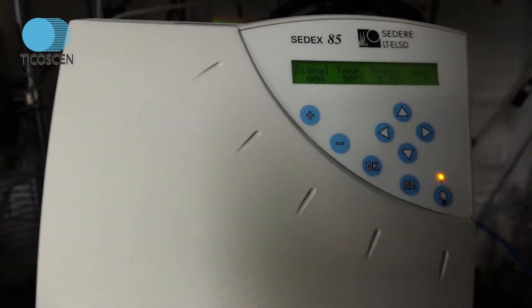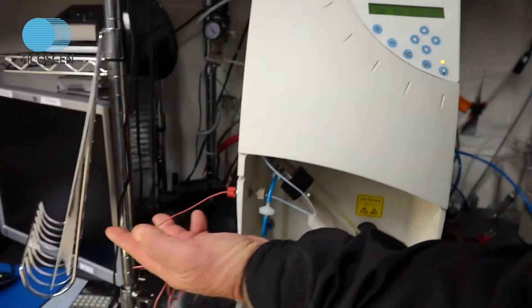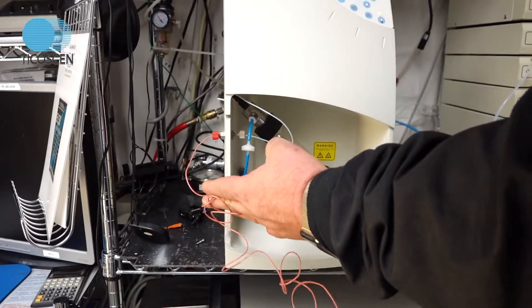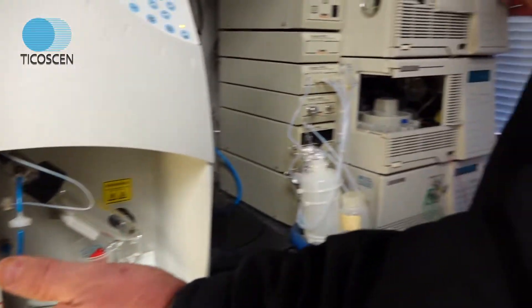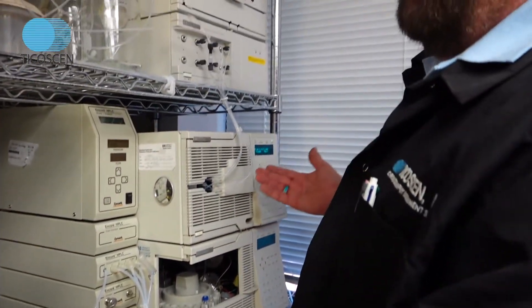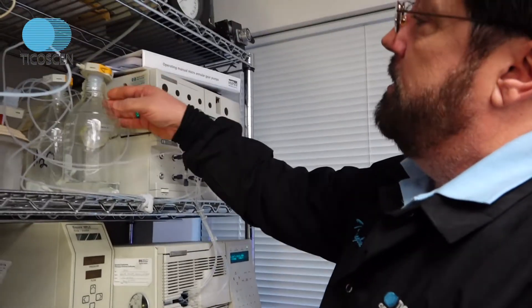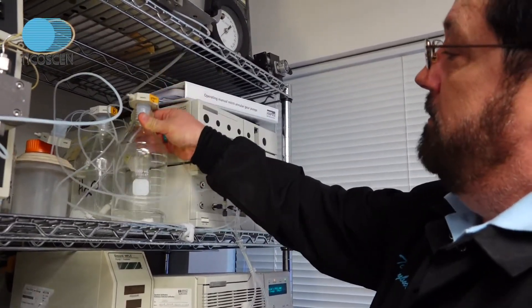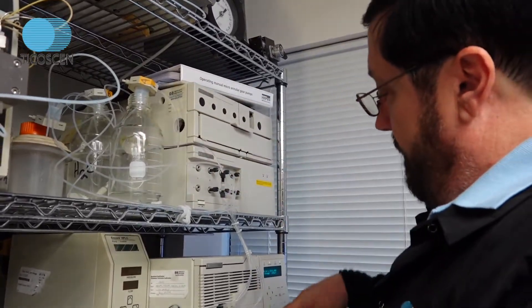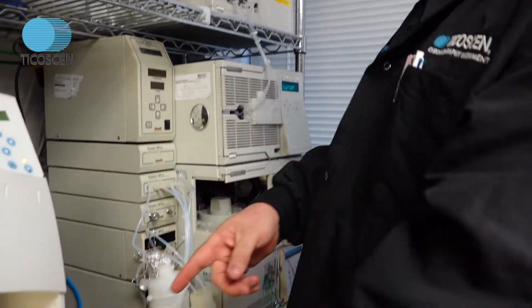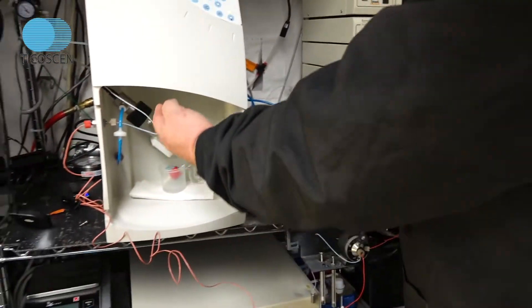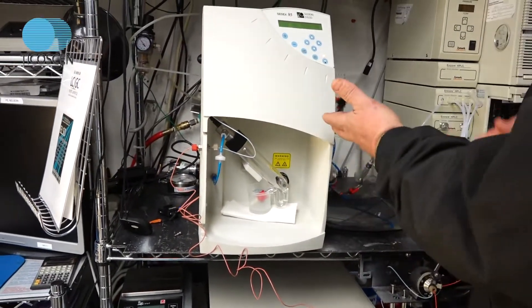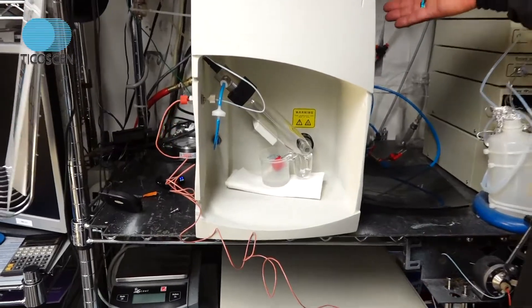Then you hook up your solvent line, which is already hooked up. You come over to your HPLC, turn your pump on, 1 ml a minute of water. Here's my water here. It's running out of this one liter bottle, and I'm pumping water through my pump, through the system, into the detector. This 1 ml a minute of water will be the source of my steam.